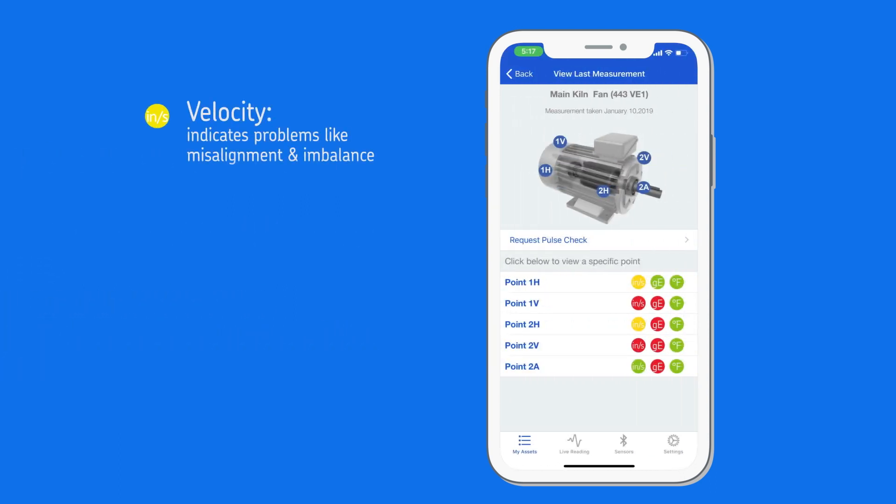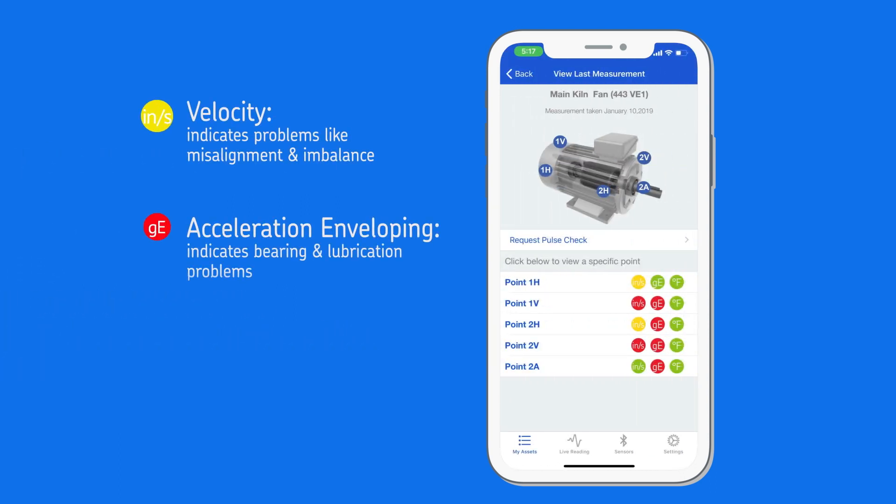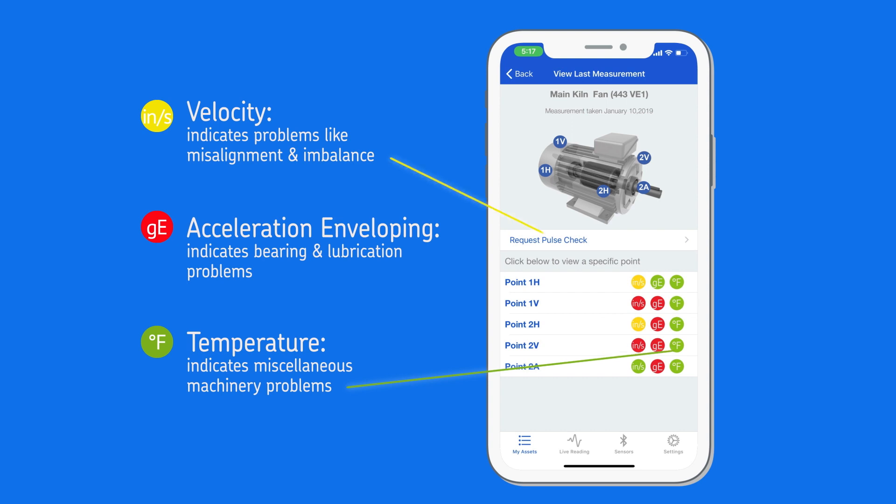Operators can instantly see the health of a machine via intuitive green, yellow, and red indicators that highlight potential problems.